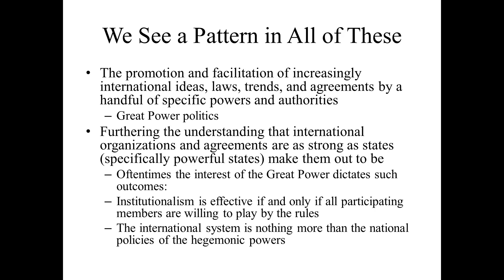A critical set of questions: if an international organization like the UN is supposed to be designed for a global community and address transnational issues and concerns, then why was so much of its original configuration the product of not only a small handful of states, but a small handful of individual statesmen? If the UN is designed today and we expect it to be everywhere, why was it that Stalin was just able to compromise because he wanted to be part of the UN? What were the enticements that got the US and the Soviet Union to be on board? One of the enticements was clearly the resurrection of a Security Council in which both countries would have significant influence on voting patterns.